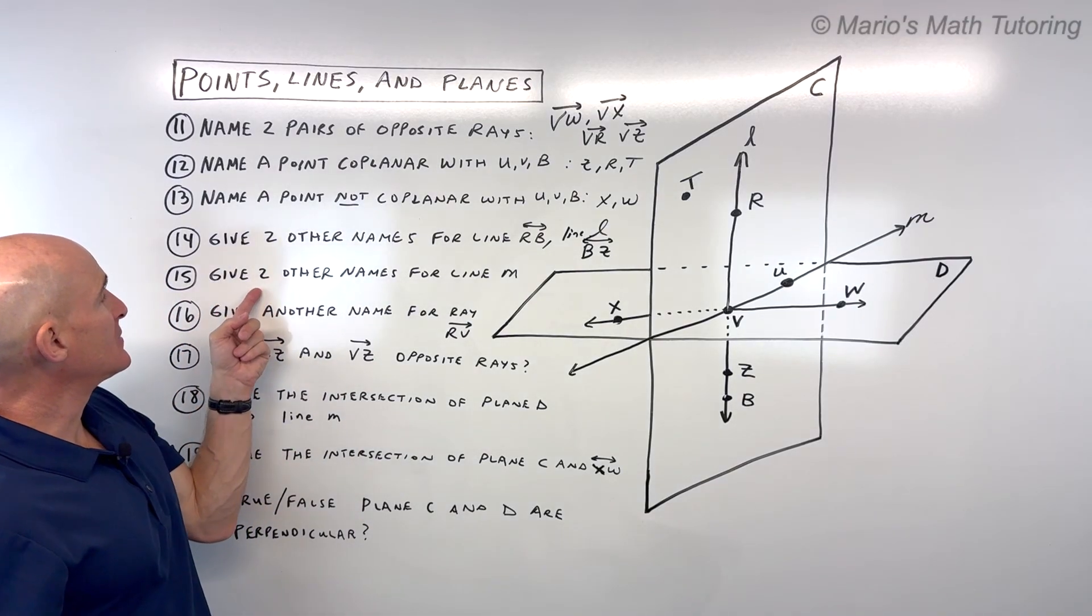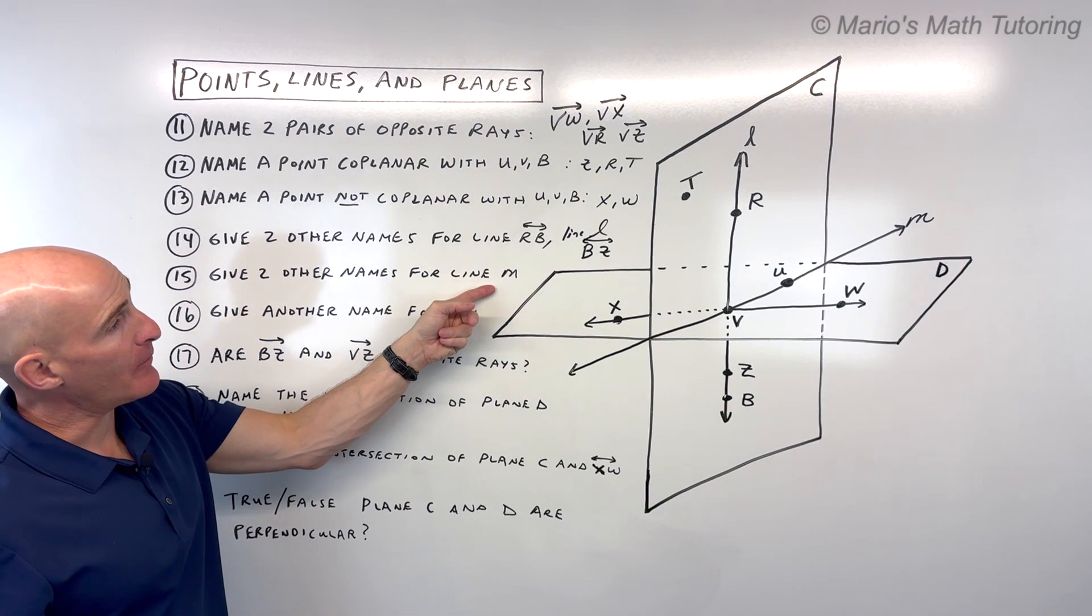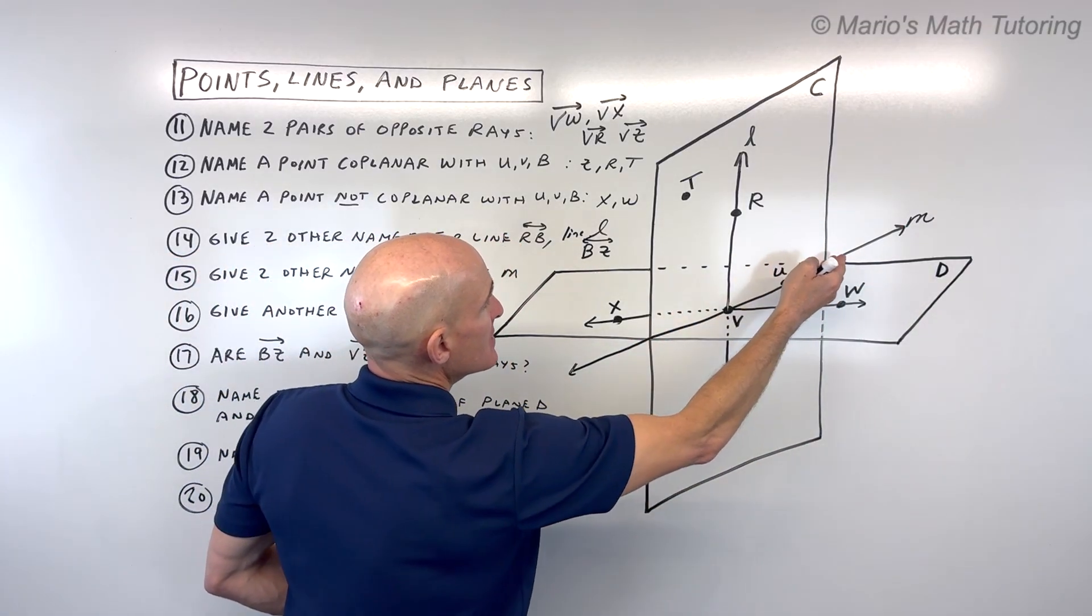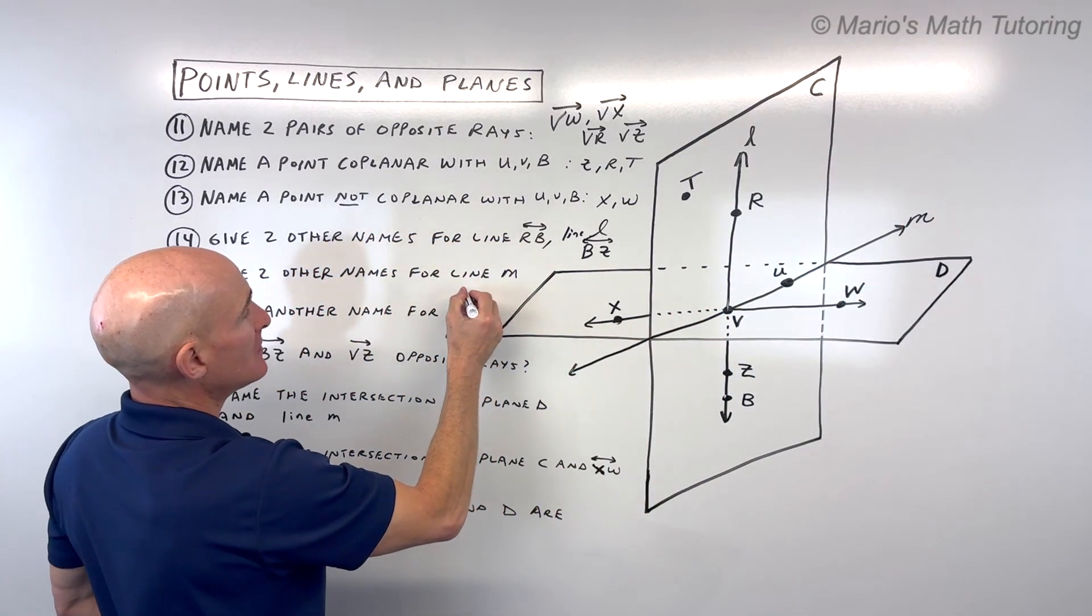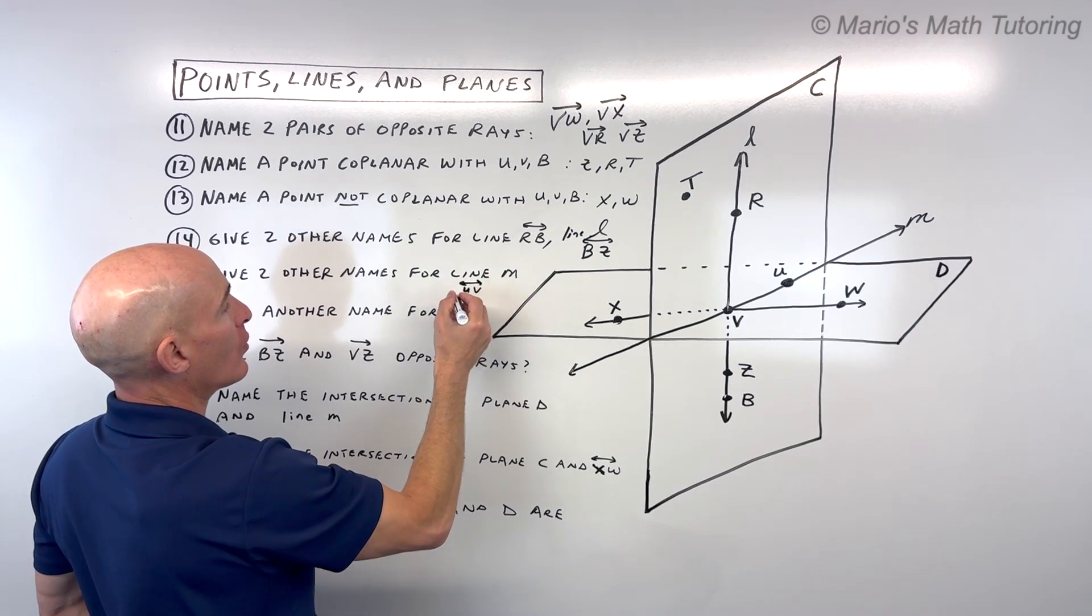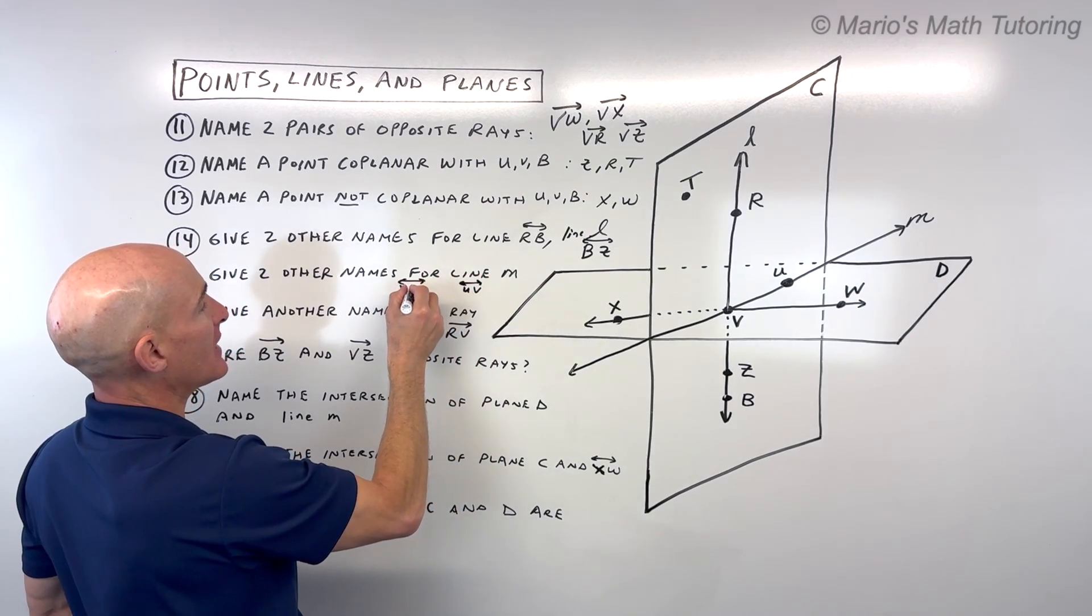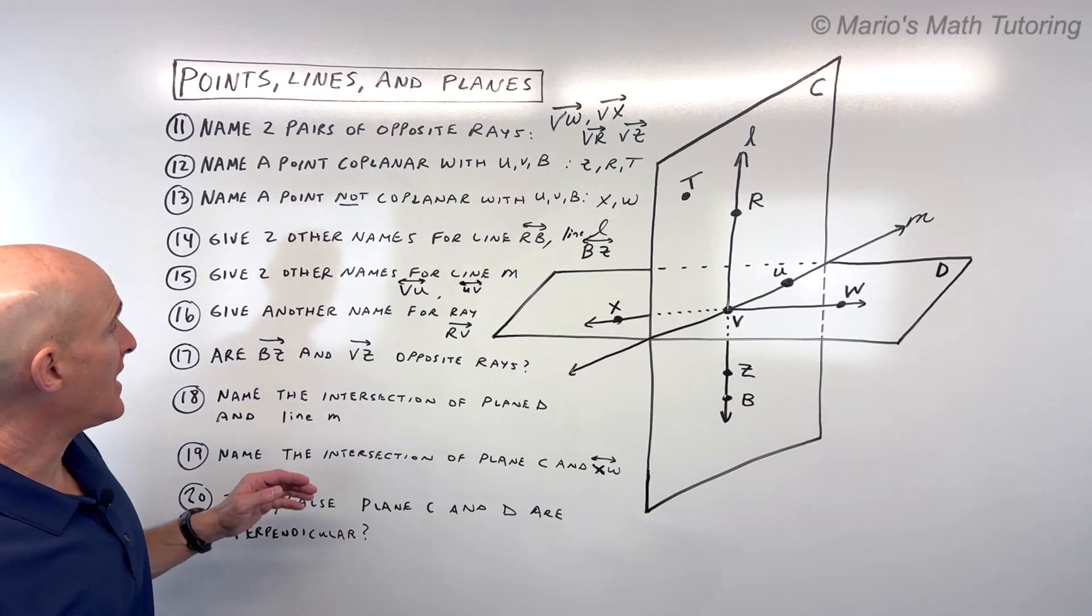For number 15, give two other names for line M. Here's line M. We could do UV, or we could do VU, drawing that line symbol above it to indicate it's a line.